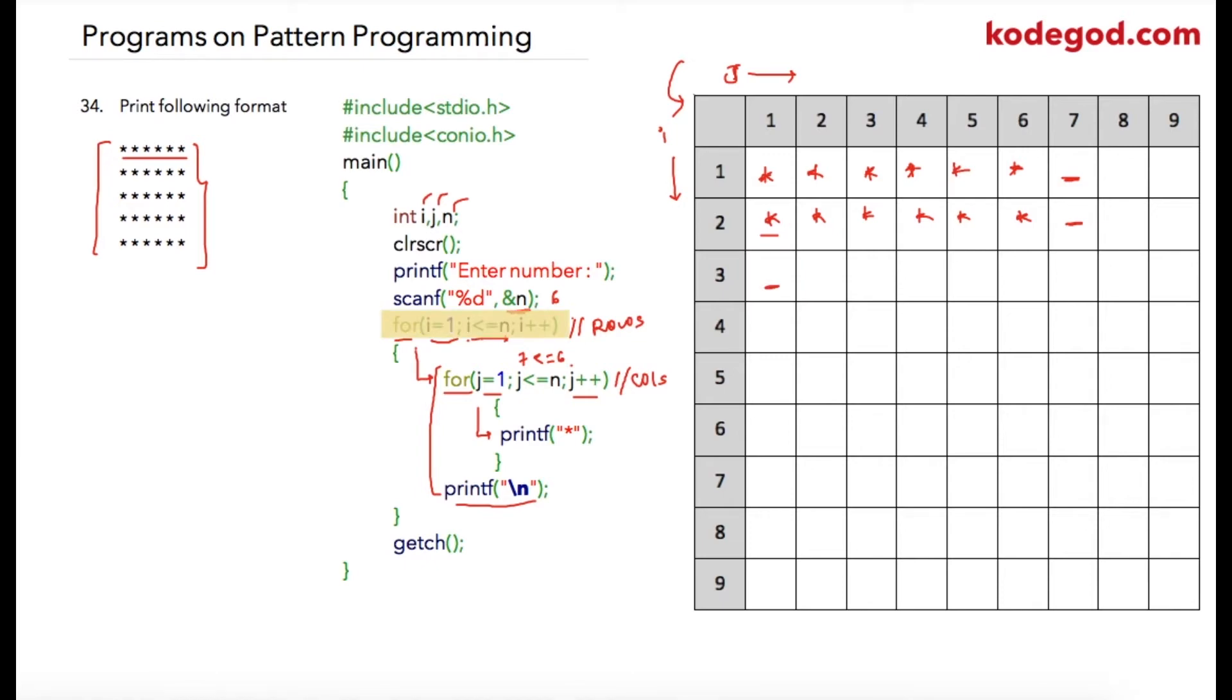So this process will be continued while i and n do not become greater than 6. So my final output will be something like this, and the cursor will be at this location. So once the main for loop is also terminated, the program will also get terminated.